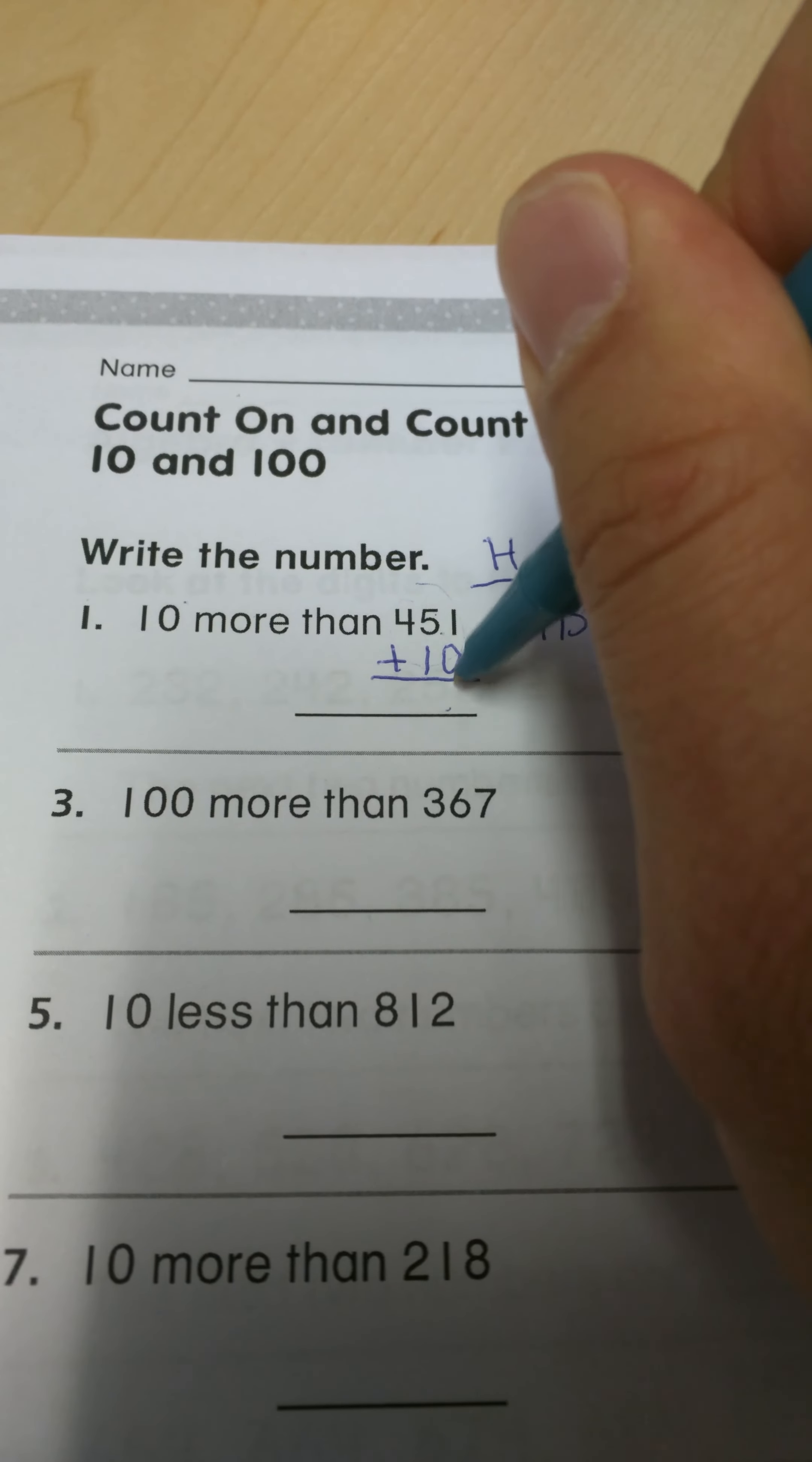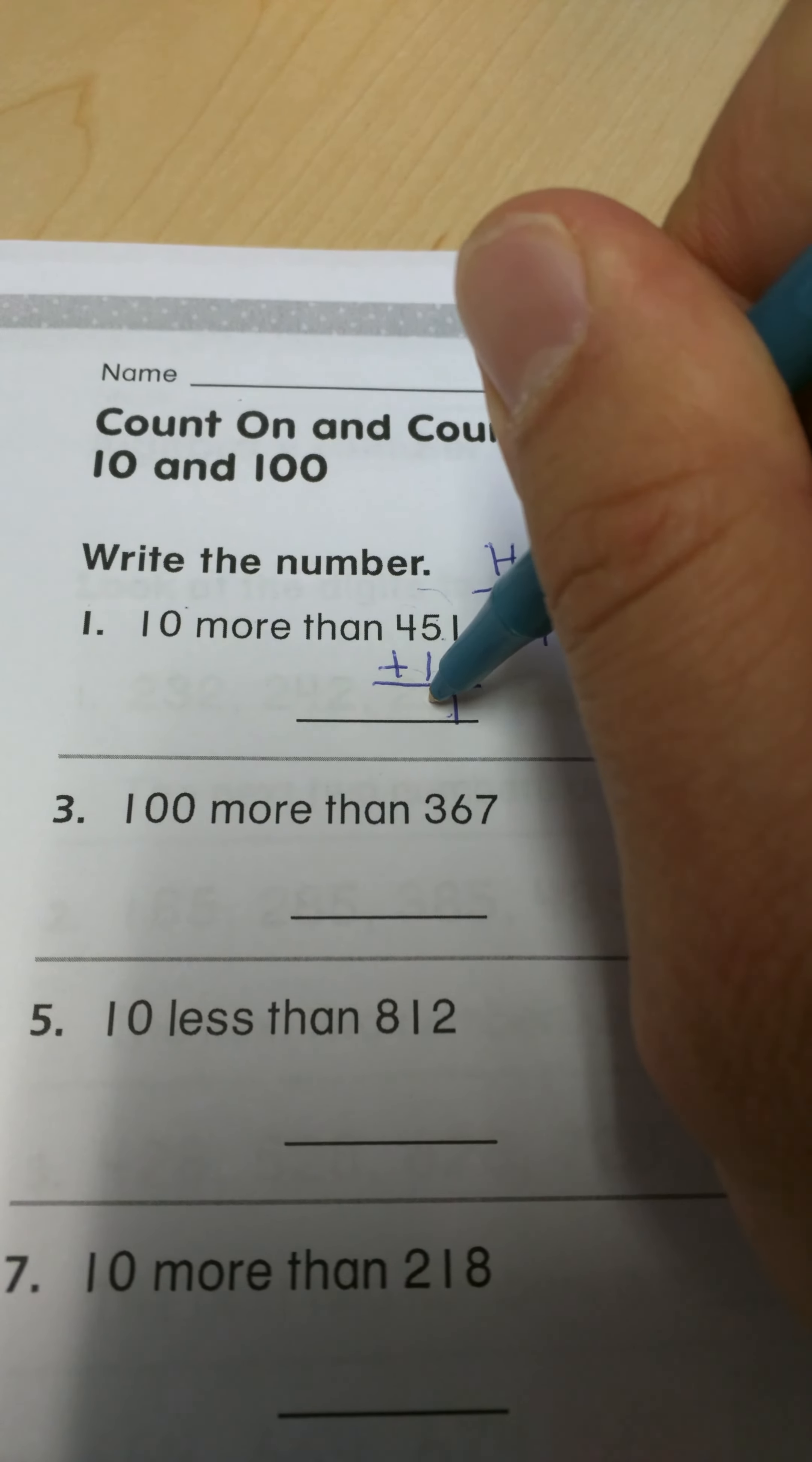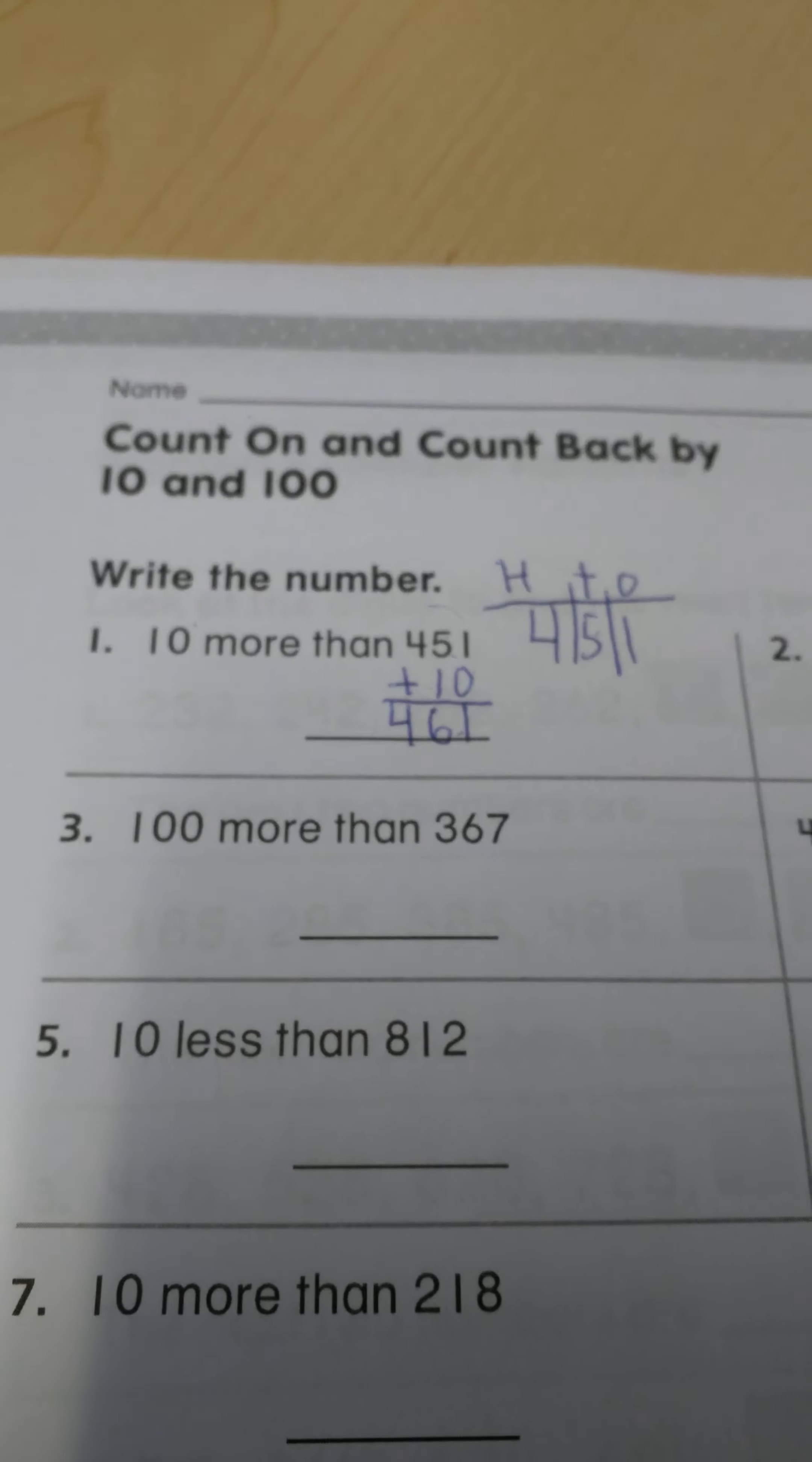So 0 plus 1 is 1, 5 plus 1 is 6, and 4 plus nothing is still 4. So 461 would be my answer.